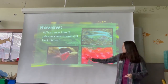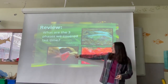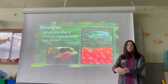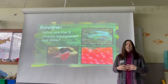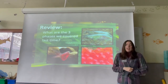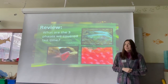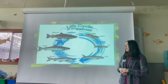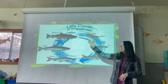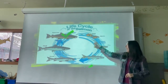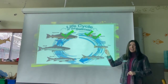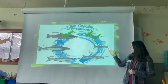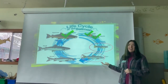Salmon eggs are laid in the gravel in redds. They'll be in the egg phase for about two months before hatching into an alevin. An alevin has a big yolk sac on its belly, which is its food source. They'll absorb that yolk sac until they button up and become a fry — which is the next phase we'll cover today, along with the parr phase.